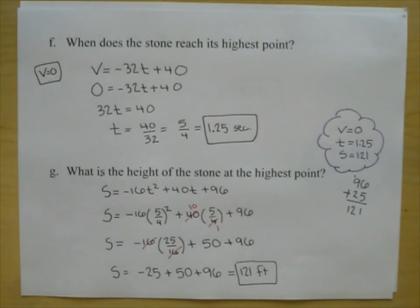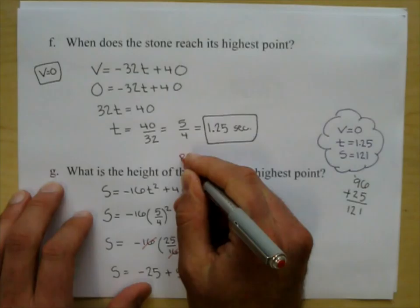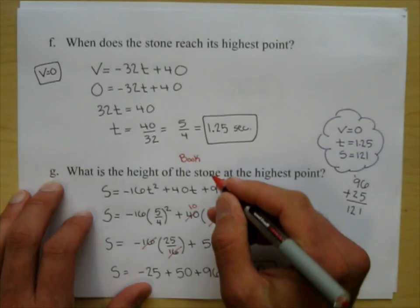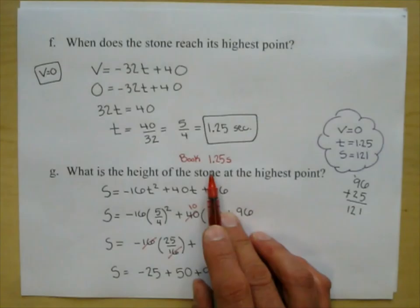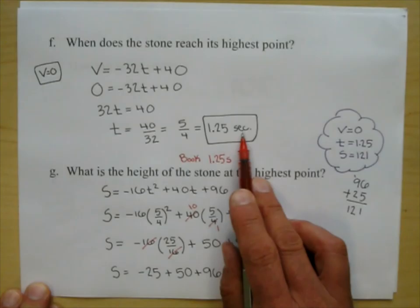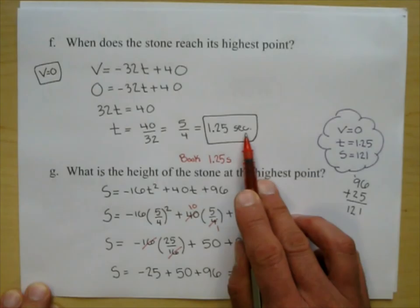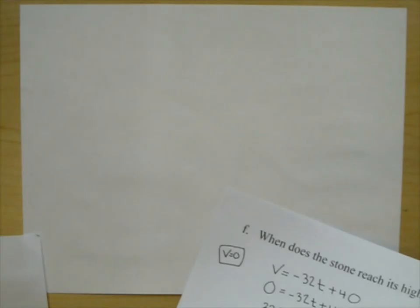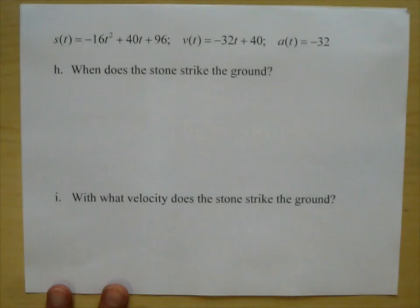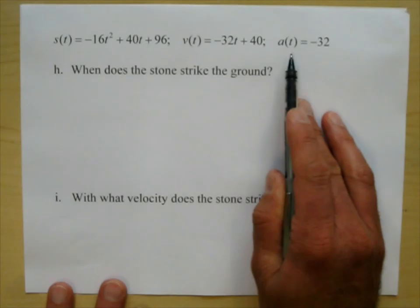In your homework you won't need to generate a graph. Also, note that your book sometimes abbreviates seconds with a little 's' after answers — they're just saying seconds using one letter instead of three.